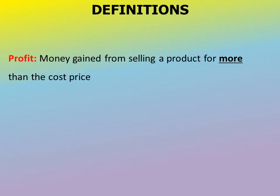Let's go straight into the terms. When we talk about profit and loss, the first term is profit. Profit is the money that you gain from selling a product — the money you gain from selling a product for more than what it costs you to purchase that product.